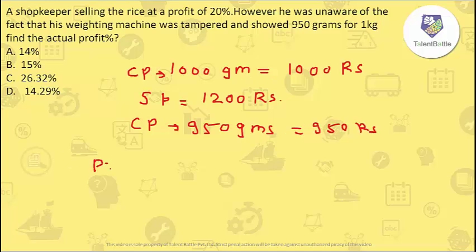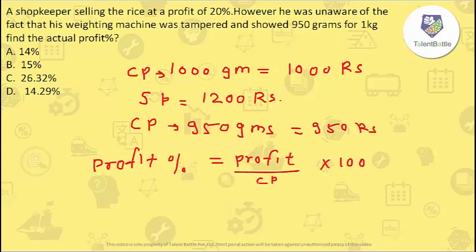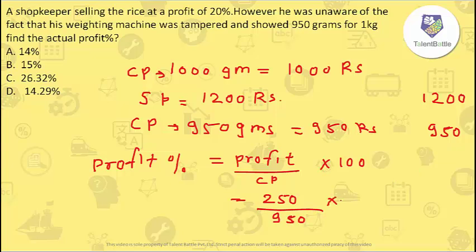They have asked for the profit percentage. The formula for profit percentage is: profit divided by CP, multiplied by 100. The selling price is 1200 rupees and the actual cost price for the rice sold is 950 rupees. The profit is 1200 − 950 = 250 rupees. So profit percentage = (250 / 950) × 100 = 500/19 ≈ 26.32%. The answer is option C.